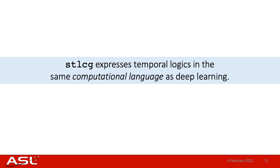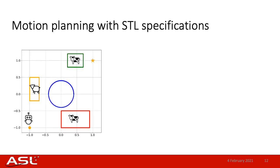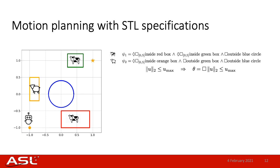I will now show a couple of small examples demonstrating how STLCG can be used with gradient-based methods, such as when training neural networks. First example: motion planning. Imagine a robot monitoring a farm that needs to survey certain paddocks while avoiding other regions and still reach a goal destination. Suppose it needs to visit the cows for five time steps before reaching the goal, while avoiding the blue circle. We could have another STL specification requiring the robot to visit the sheep for five time steps, avoid the green paddock, avoid the blue circle, and also reach the goal destination. Control constraints can also be represented as an STL specification.